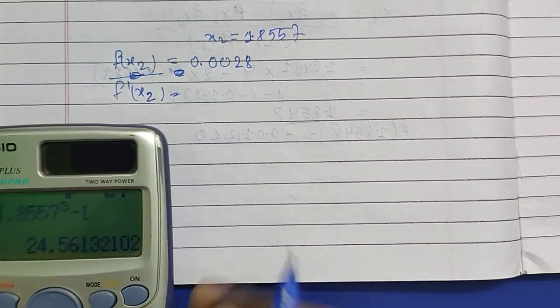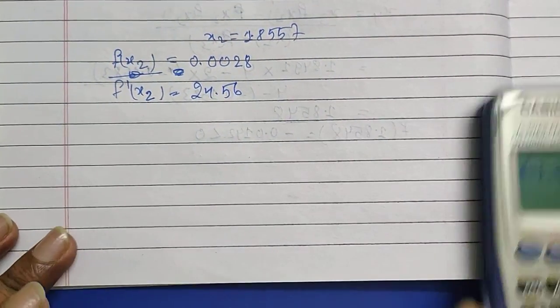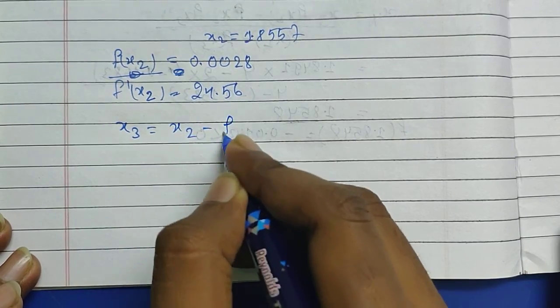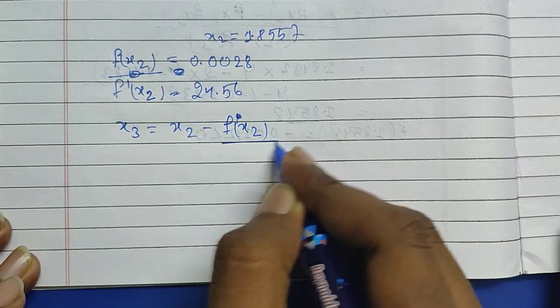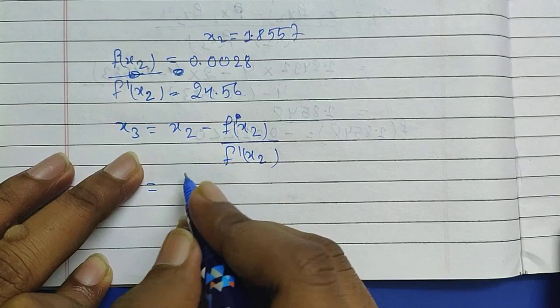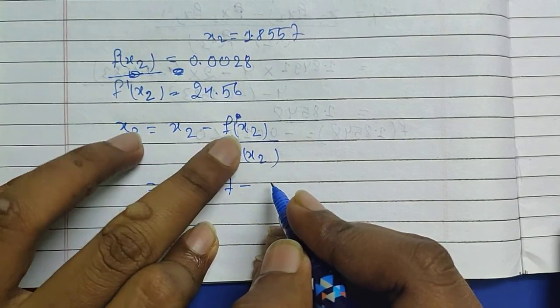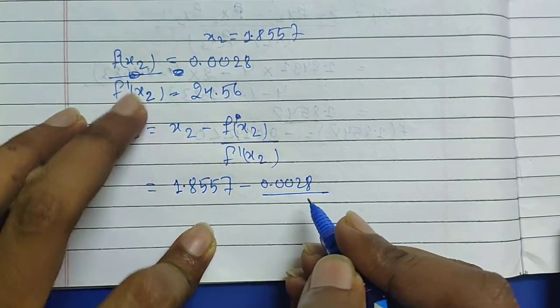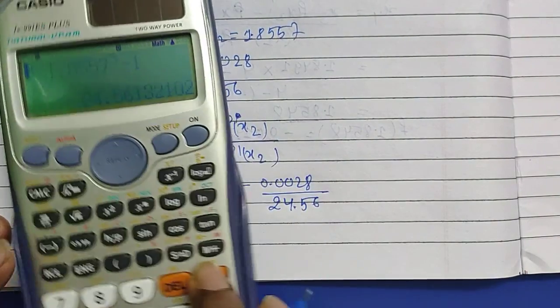And here f'(x_2), it will be 4 × 1.8557^3 - 1, and this is going to be 24.56. Now let's find x_3, and x_3 again is going to be x_2 - f(x_2)/f'(x_2). Now put the value of each term, then this is going to be 1.8557 - f(x_2) 0.0028 by f'(x_2) 24.56.